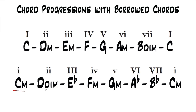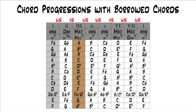The parallel minor of C major is C minor, and that's: C minor, D diminished, E flat, F minor, G minor, A flat, B flat, C minor. So we're just taking the minor key with the same name — C and C. Relative minor has all the same notes and chords; you're just starting from a different spot. Parallel minor doesn't do that. This C minor is actually the relative minor of E flat major.